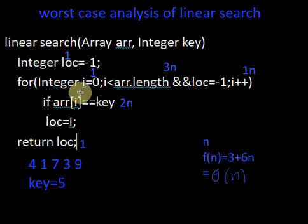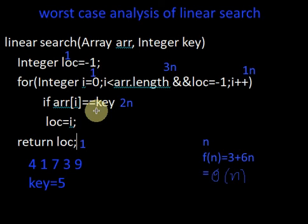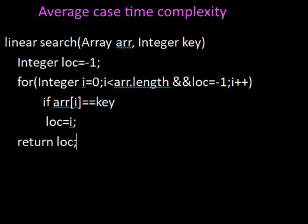If we observe this algorithm, we can realize that the key operation which determines the time complexity is the comparison operation. In the best case, the comparison is executed only once, and hence the best case time complexity is Θ(1). In the worst case, the comparison operation is executed n times, and hence the worst case time complexity is of the order of n.